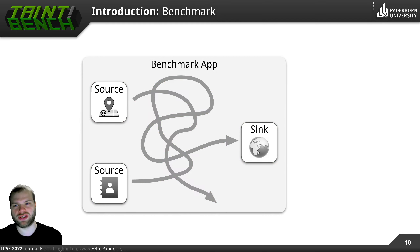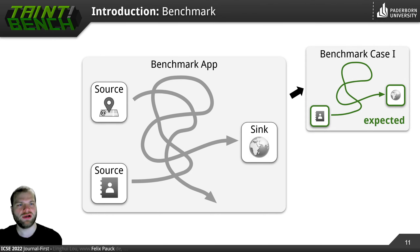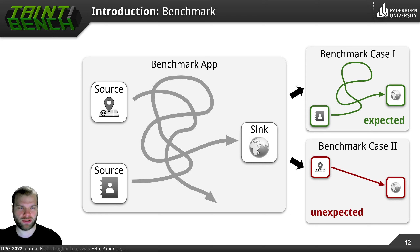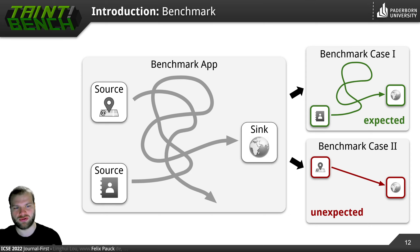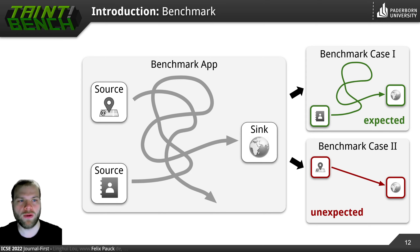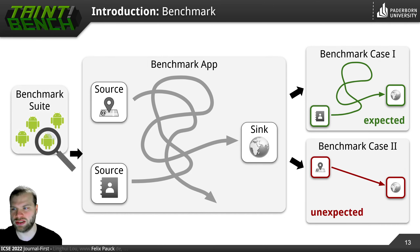In a benchmark or a single benchmark app, we comprise benchmark cases of connected sources and sinks. This particular example includes one expected benchmark case with the second source accessing the contact data that is actually connected to the sink. And we have one unexpected one — the first source accessing the device location is not connected to the sink. So if a taint analysis tool finds this connection, that is an unexpected finding and it is a wrong finding — a false positive. Hence, we document expected and unexpected cases for a benchmark app. A whole benchmark suite then comprises dozens or hundreds of these benchmark apps.